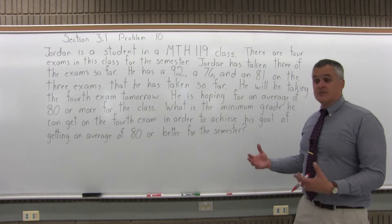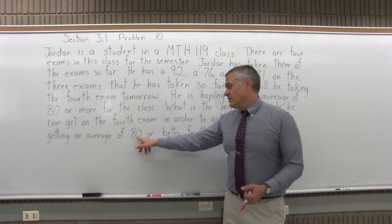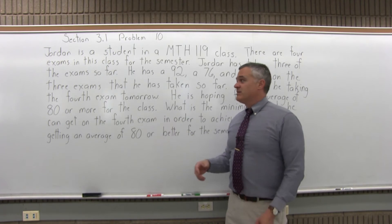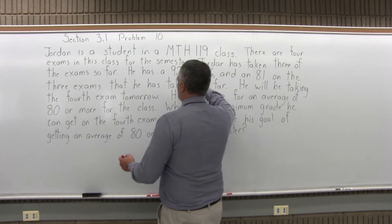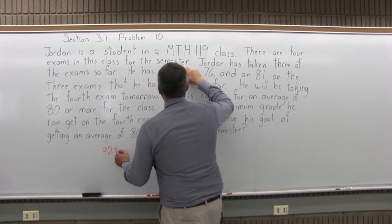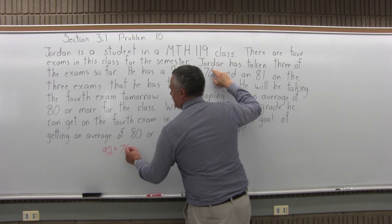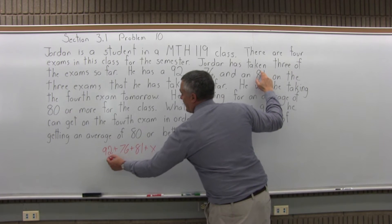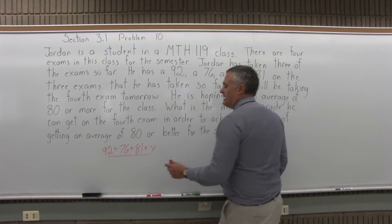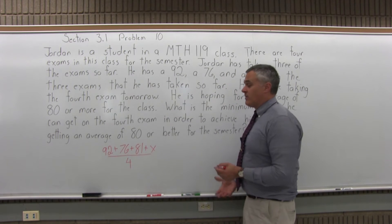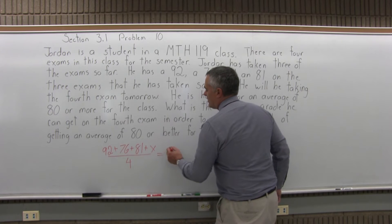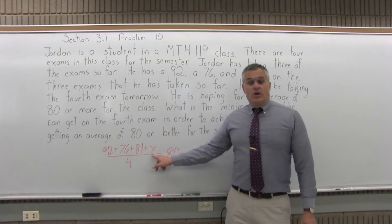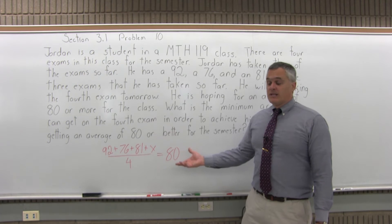This is a situation that a lot of students find themselves in — what do you need on that last exam? What you would do is add up your four scores, divide by four, and see what the average comes out to. The problem is you don't have all four scores yet. So Jordan has a 92, plus a 76 for the second exam, plus an 81 for the third exam, plus X — an unknown amount for the fourth exam — divided by four. We want that average to come out to 80 or better. So we have an equation with one unknown, and applying the proper algebra, we can solve for it.